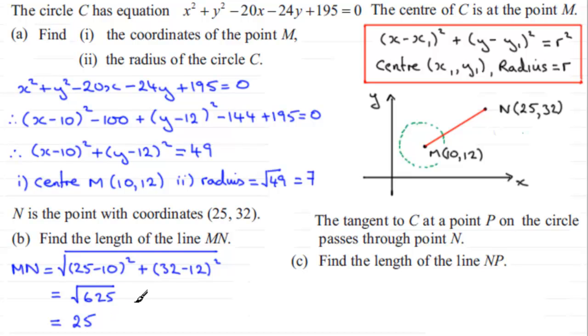In this next part, we're told that the tangent to our circle C—let's just label that C—the tangent to C at the point P on the circle passes through the point N. Find the length of the line NP. Now that means our tangent could be coming from here, touching the circle at this point here, or it could be down to this point here, but by symmetry that length is not going to change. This point here is P. We've got to find that distance N to P. And to do this, we should be familiar with the fact that the radius of a circle always makes a right angle with the tangent.